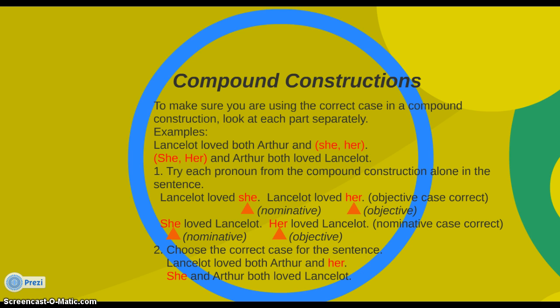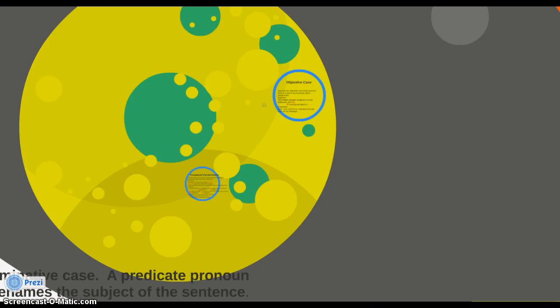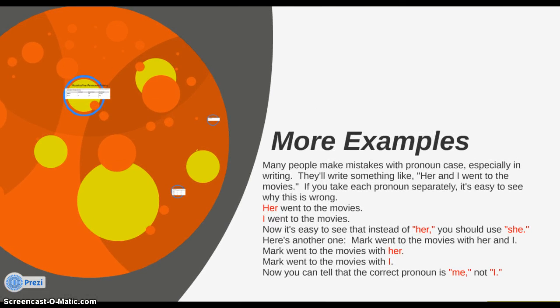So once you've broken it apart into separate sentences, it's really easy to see which case is the right one. Our answers are: "Lancelot loved both Arthur and her," and "She and Arthur both loved Lancelot." If you ever find yourself getting confused, break the sentence into parts and try each pronoun to see which one is the right fit. Here are some more examples of a problem a lot of people have — they make mistakes and write something because they think it's correct, but it's not the way they would naturally say it.